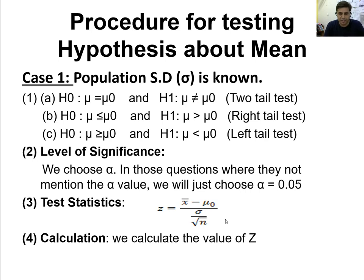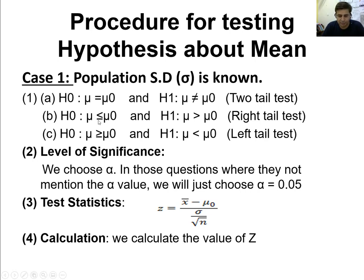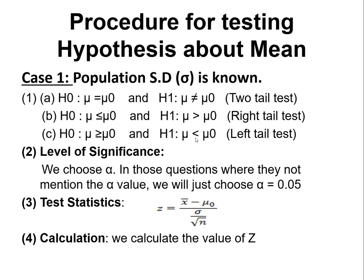Before the example, you need to understand the procedure for testing hypothesis about the mean — Case 1, where population standard deviation is known. The null hypothesis depends on the tail of the test. If the null is mu equal to 10, the alternative is mu not equal to 10 — a two-tailed test. If the null is mu less than or equal to 10, the alternative is mu greater than 10 — a right-tailed test. If the null is mu greater than or equal to 10, the alternative is mu less than 10 — a left-tailed test.